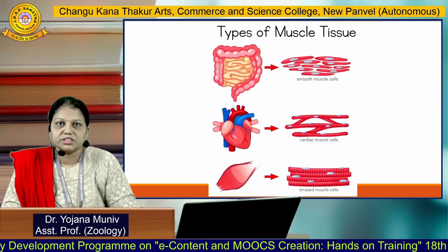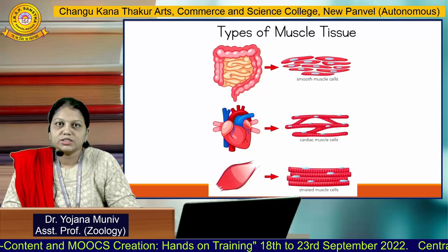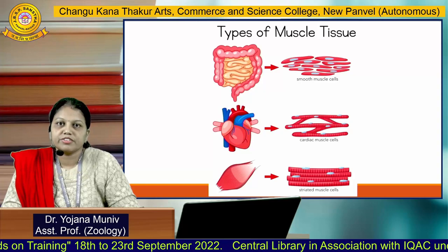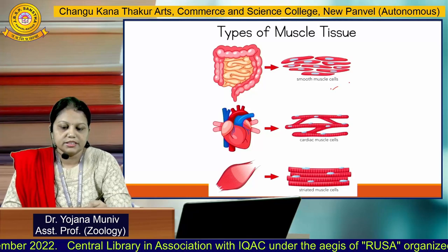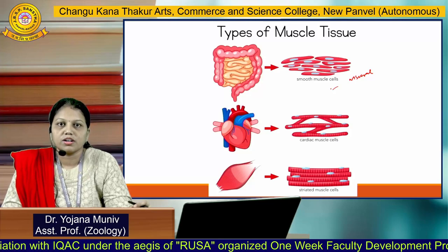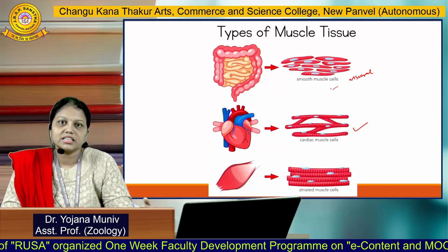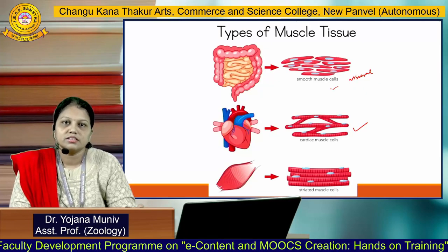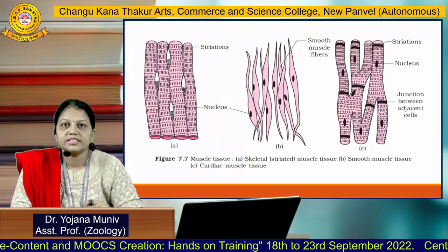Our body is made up of cells, and cells come together to form tissues. Different kinds of muscles are present in our body. Three types of muscles are present which form different organs and systems. The first one is smooth muscle fiber, also called visceral muscle fiber, because it is related to the visceral organs. The second one is cardiac muscle cells, which are related to the heart. The third one is striated muscle fiber, also known as skeletal muscle fiber.